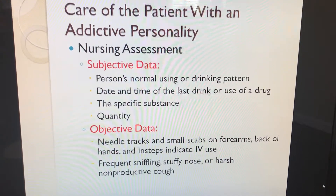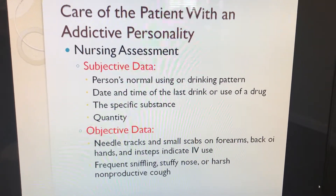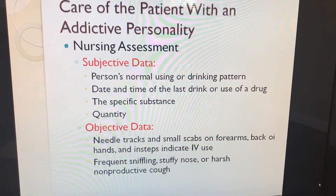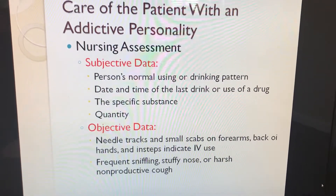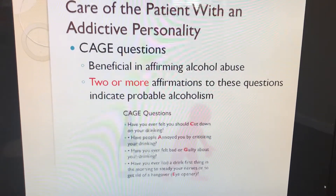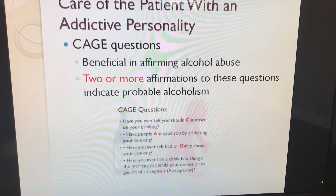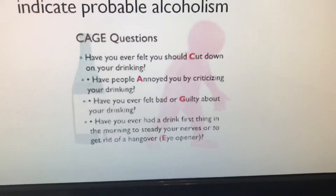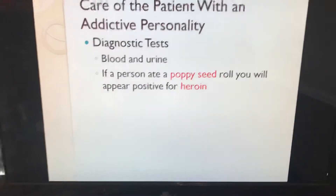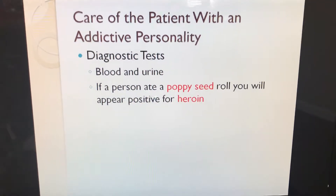For nursing assessment, subjective data includes the person's normal using or drinking pattern, date and time of the last drink or drug use, the specific substance, and the quantity. Objective data can include needle tracks and small scabs on the forearms, back of hands, and insteps indicating IV use, frequent sniffling, stuffy nose, or harsh nonproductive cough. The CAGE questionnaire is beneficial in affirming alcohol abuse; two or more affirmations indicate probable alcoholism. Diagnostic tests include blood and urine — note that eating a poppy seed roll can cause a positive result for heroin.